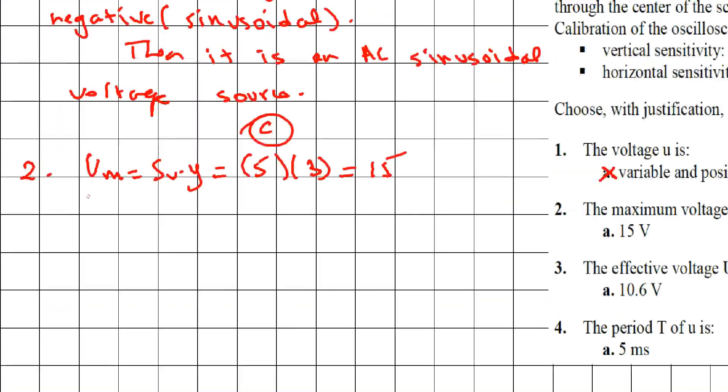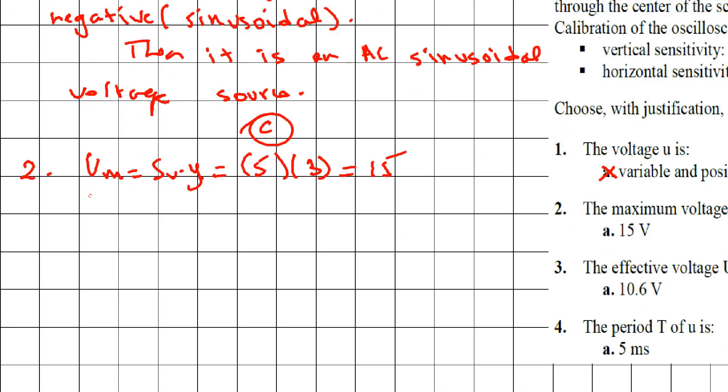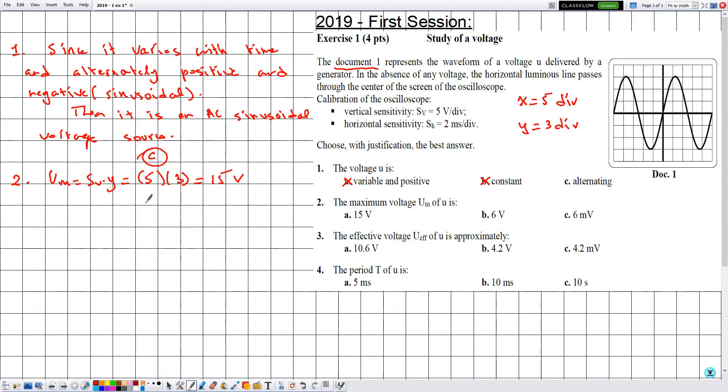This gives us 15. Since both Sv and y are in SI units, the value of Um will be in SI. The maximum voltage is 15 volts. This is the justification of number two, and the best answer is a.